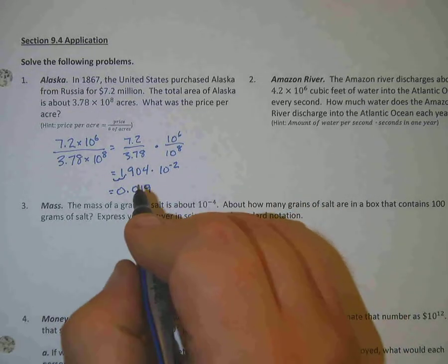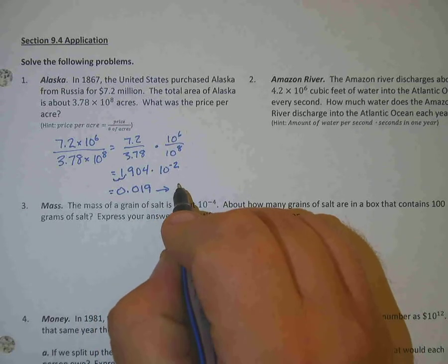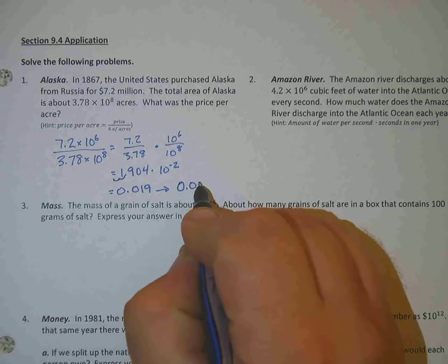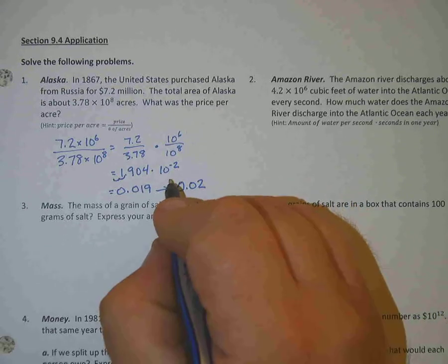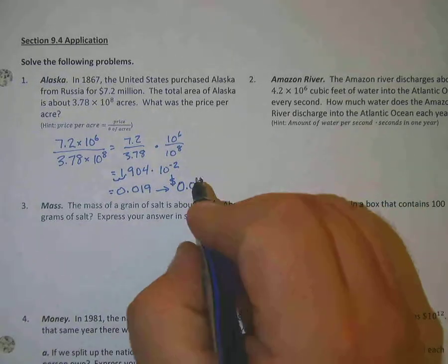And really what that means is if we round that, let's say that we got it for, when we bought it, we bought it for about 0.02 dollars. Meaning 2 cents per acre.